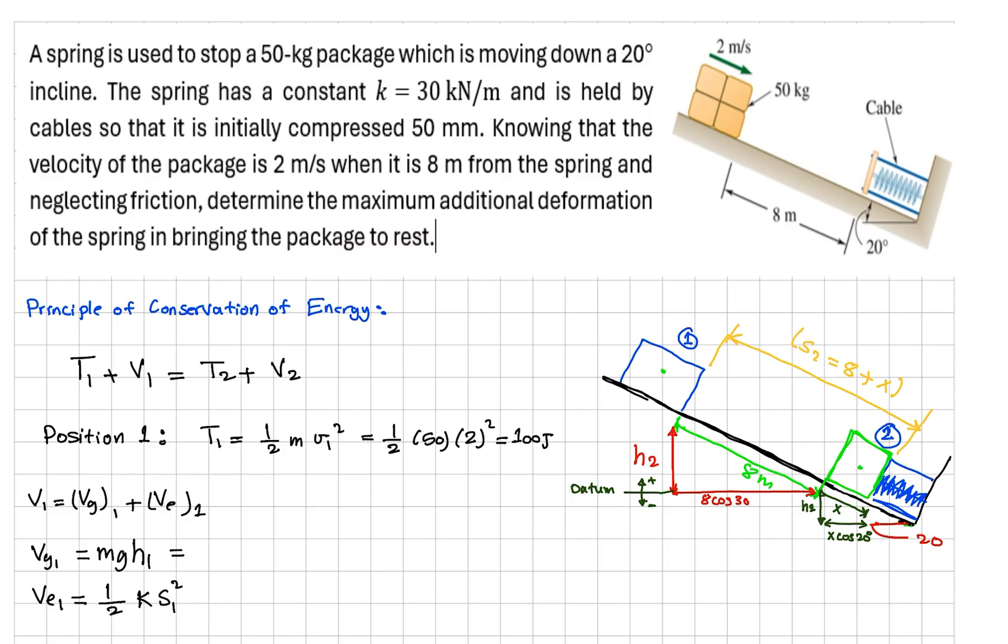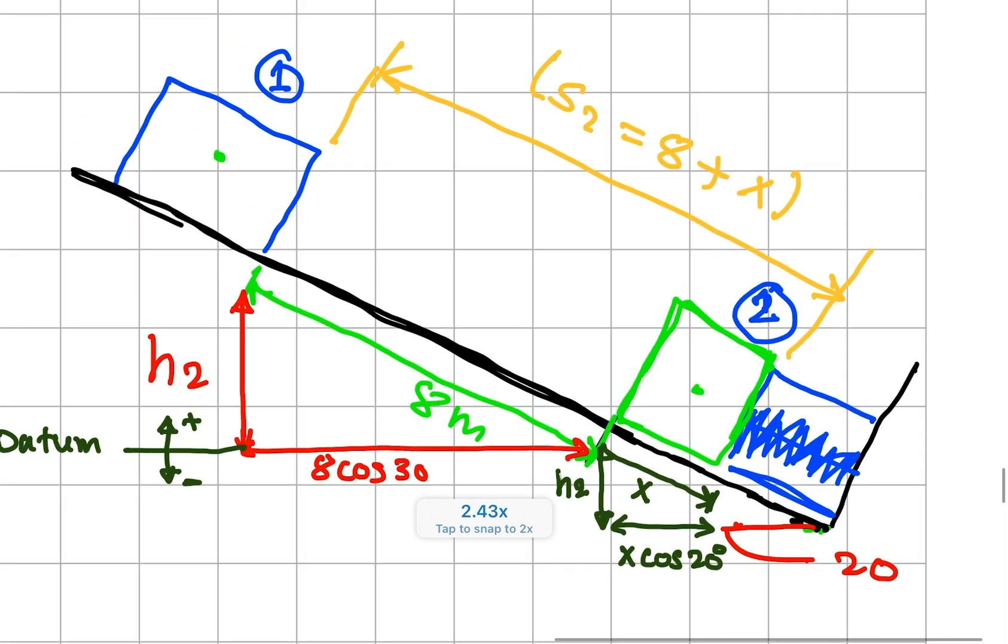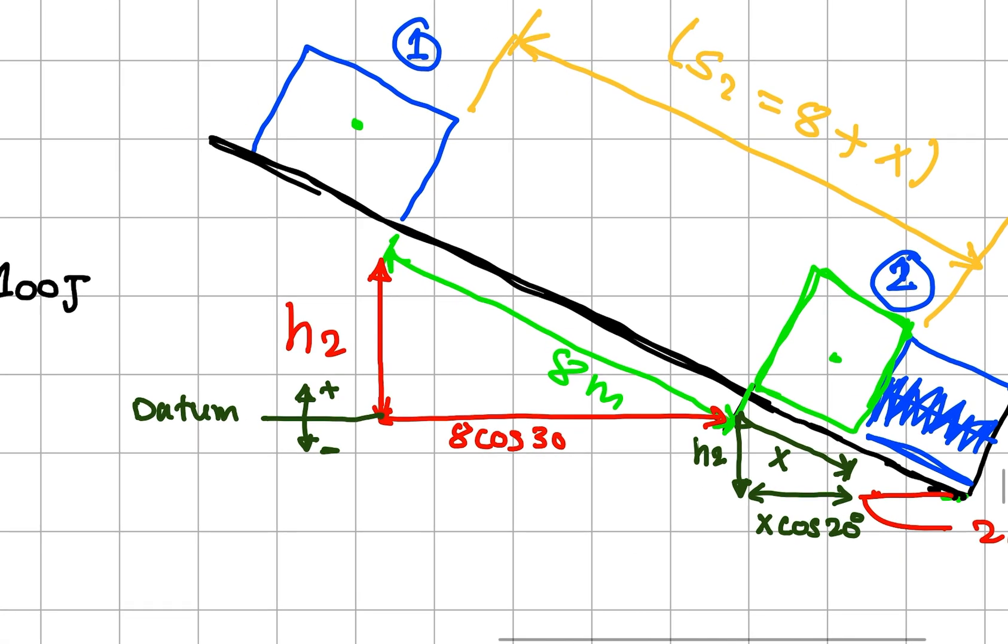So we have a package that moves from this position to this position by 8 meters, and then it's going to push the spring by a distance of x. We don't know how much is that x. Because of the acceleration, it's going to push it by distance x, so we need to calculate this x.